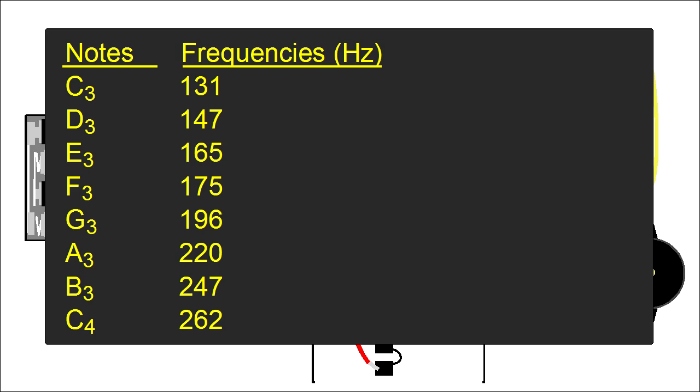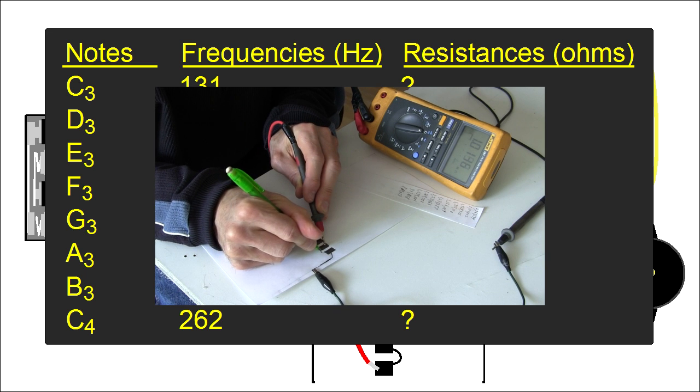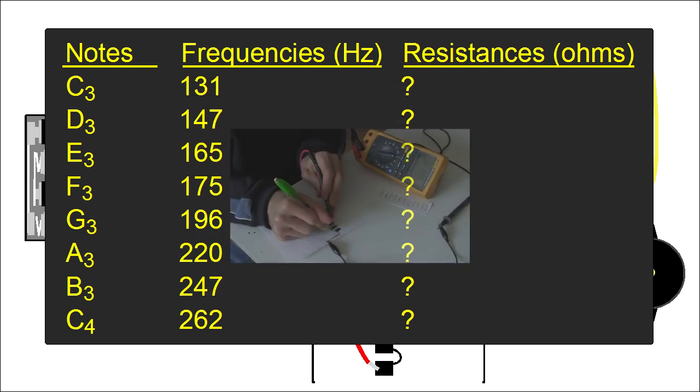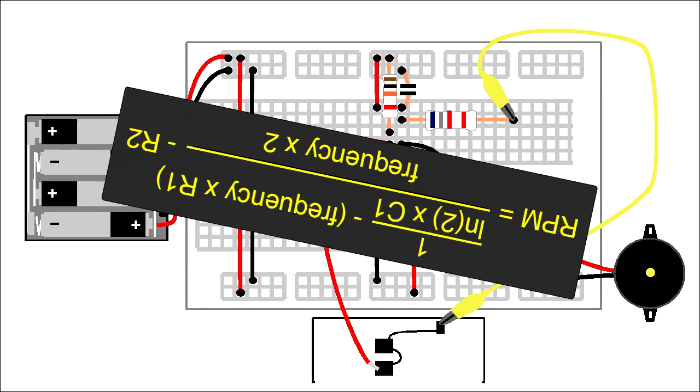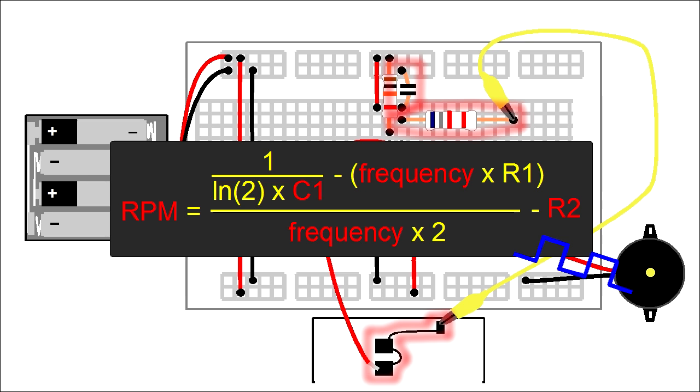We already know the frequencies for the musical notes. We looked that up online. What we want to know is what resistance to use for the pencil marks. That tells us how long and how thick to make those marks in order to get the notes. So, using simple algebra, I rearranged the formula so if we know the desired frequency and capacitance of this capacitor and resistance of this resistor, it'll spit out the resistance needed for the pencil mark.